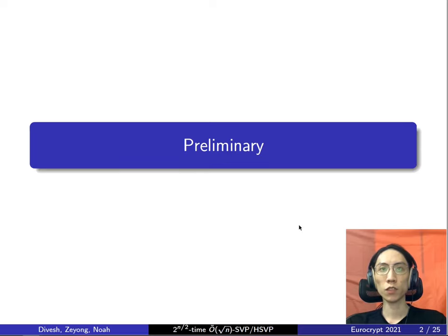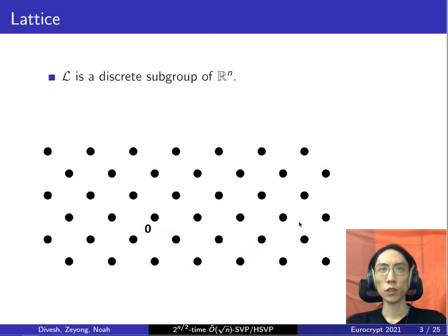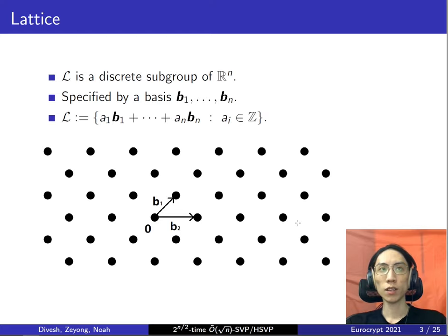First, let's look at some basics. What is a lattice? A lattice is a discrete subgroup. Here I have a two-dimensional lattice specified by a set of linearly independent basis vectors. The lattice is then generated by all integer combinations of these basis vectors.